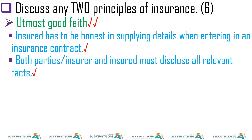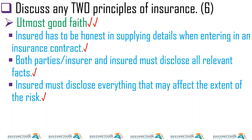Then we have utmost good faith — this is self-explanatory. The insured has to be honest, which means you have to disclose everything. For example, if you go to insure a car, they need to know the value. If you don't mention that your car was involved in an accident before, you are not being honest. Both parties — the insured and insurer — must disclose all relevant facts.